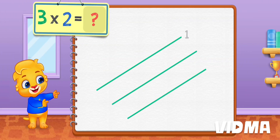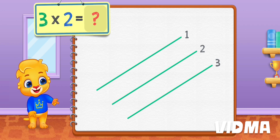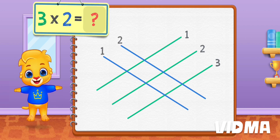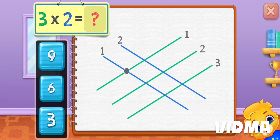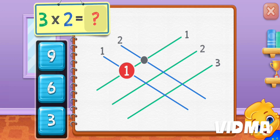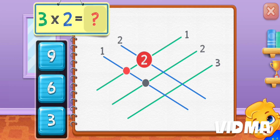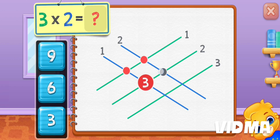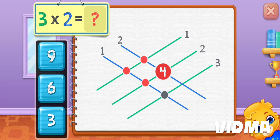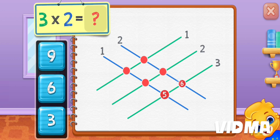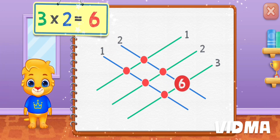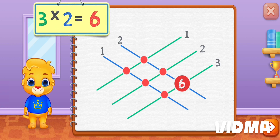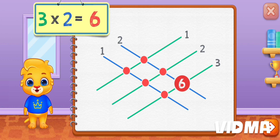Three times two equals — one, two, three, four, five, six. Three times two equals six.